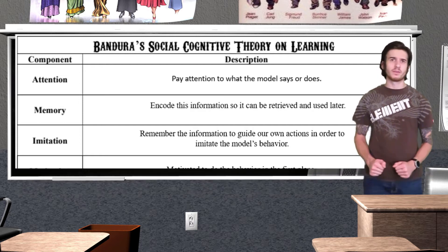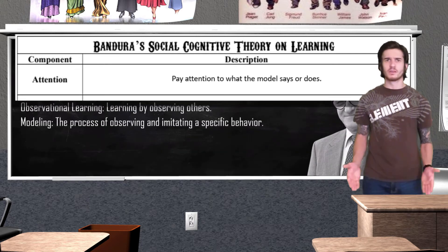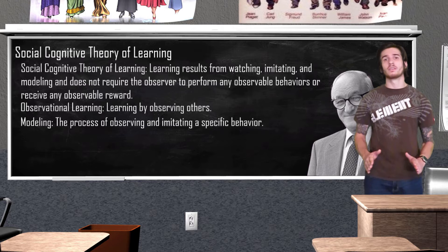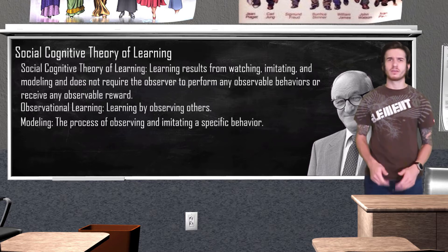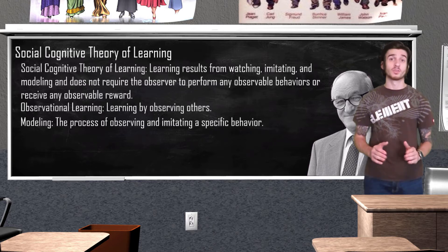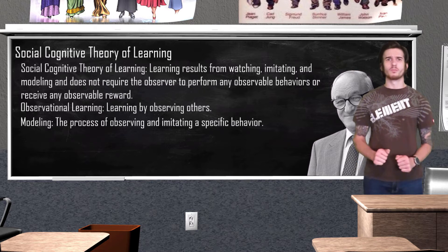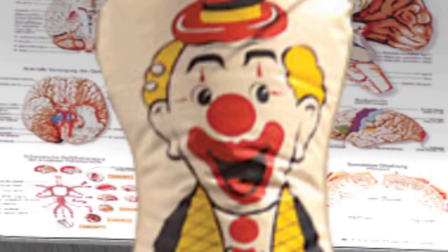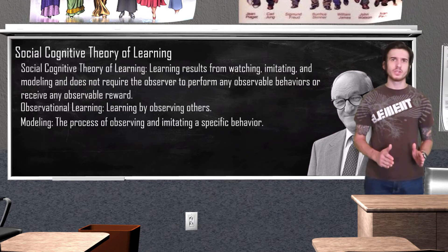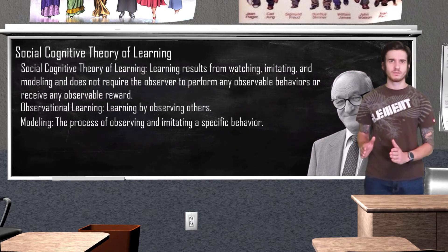So how exactly did Bandura come up with this theory? Well, that's where our friend Bobo is going to come in. Starting in the 1960s, Bandura conducted several experiments on observational learning, one of his most well-known being the Bobo doll experiment. The goal was to see if aggression can be acquired through observation and imitation.